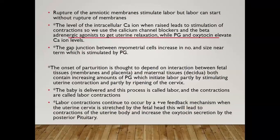Prostaglandin and oxytocin cause elevation of intracellular calcium ion levels. Gap junctions between myometrial cells increase in number and size near term, stimulated by prostaglandin, which may explain the initiation of labor. The onset of parturition is thought to depend on interaction between fetal tissue, the membranes and placenta, and maternal decidua, all containing increased amounts of prostaglandin, which initiates labor by stimulating uterine contraction and partly by ripening of the cervix.